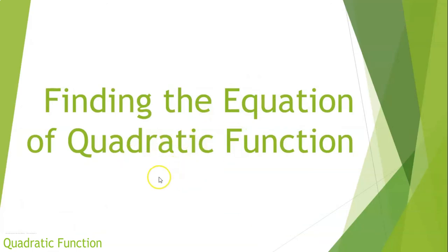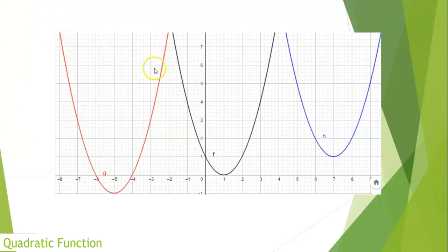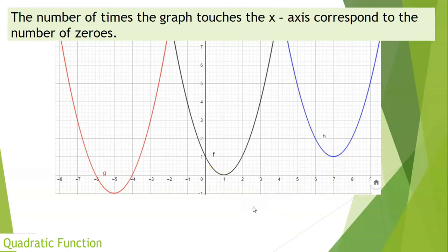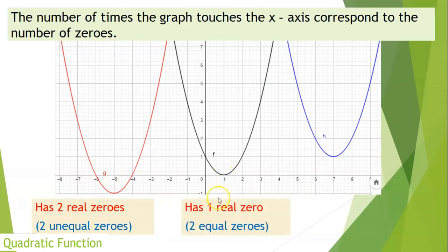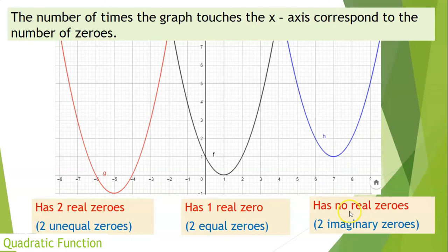Finding the equation of a quadratic function. There are three different graph cases. The red graph touches the x-axis at two points (two real and unequal roots). The second graph touches the x-axis at one point (one real zero — two real and equal roots). The third graph never touches the x-axis (the roots are imaginary). The number of times the graph touches the x-axis corresponds to the number of zeros.